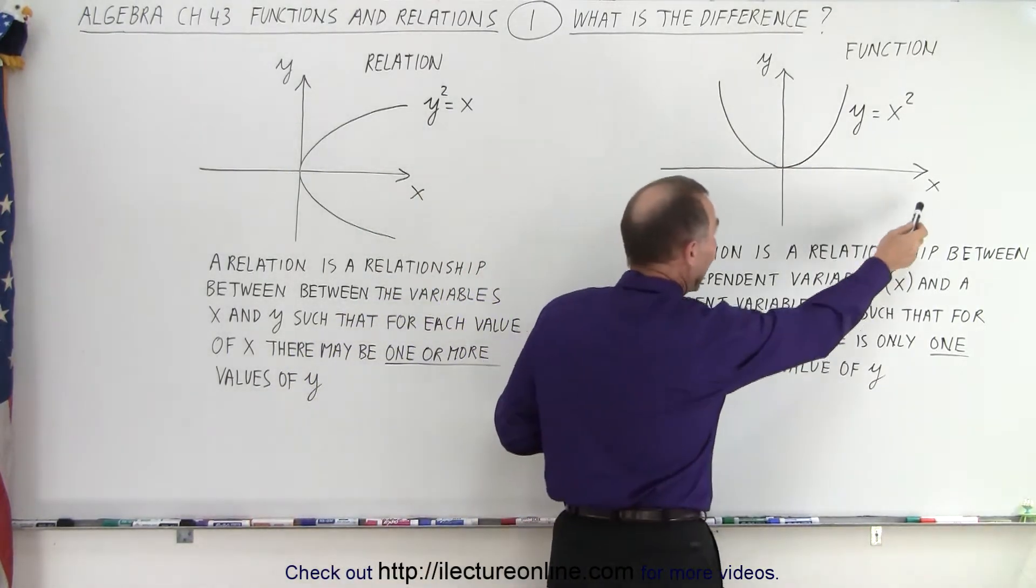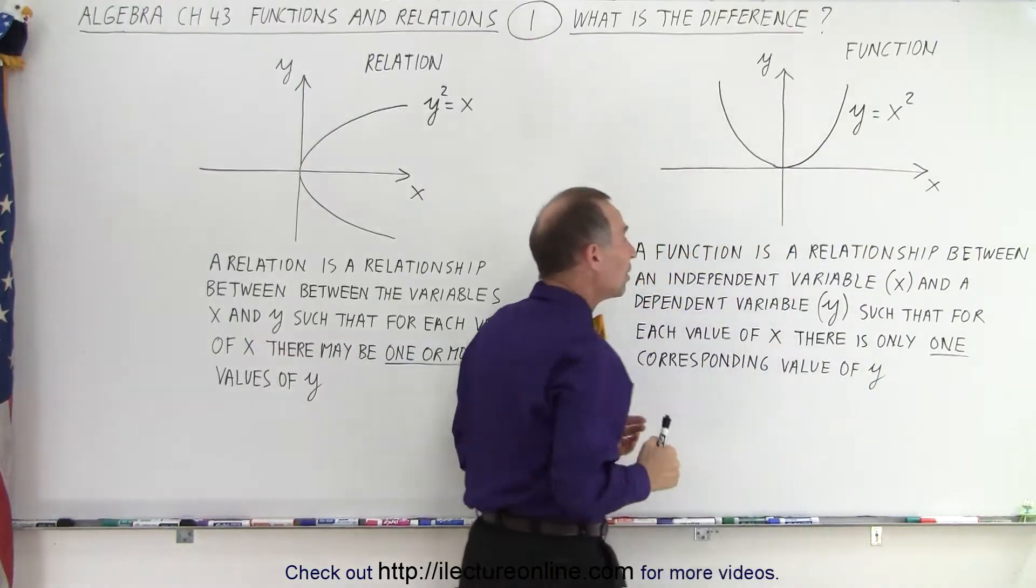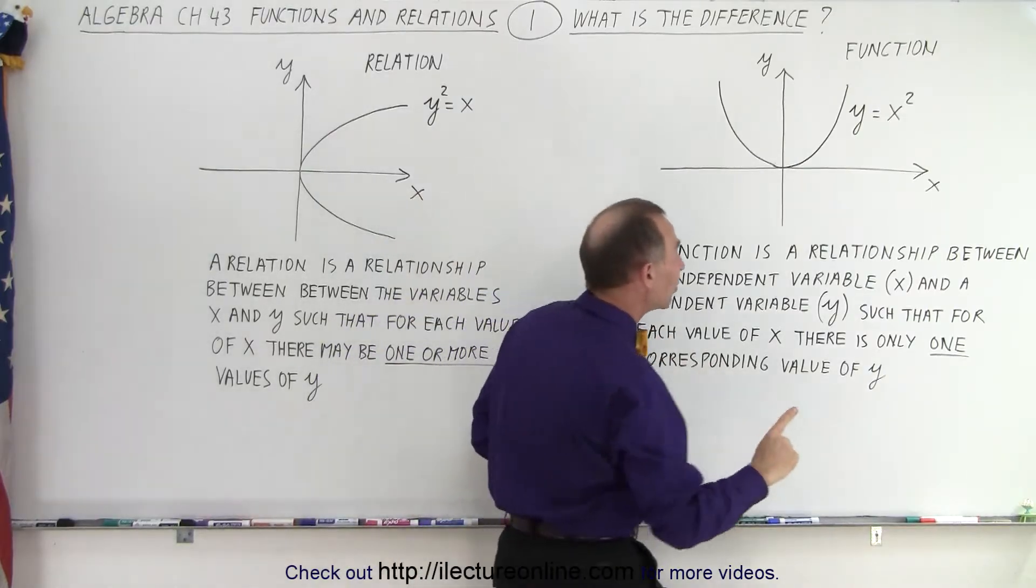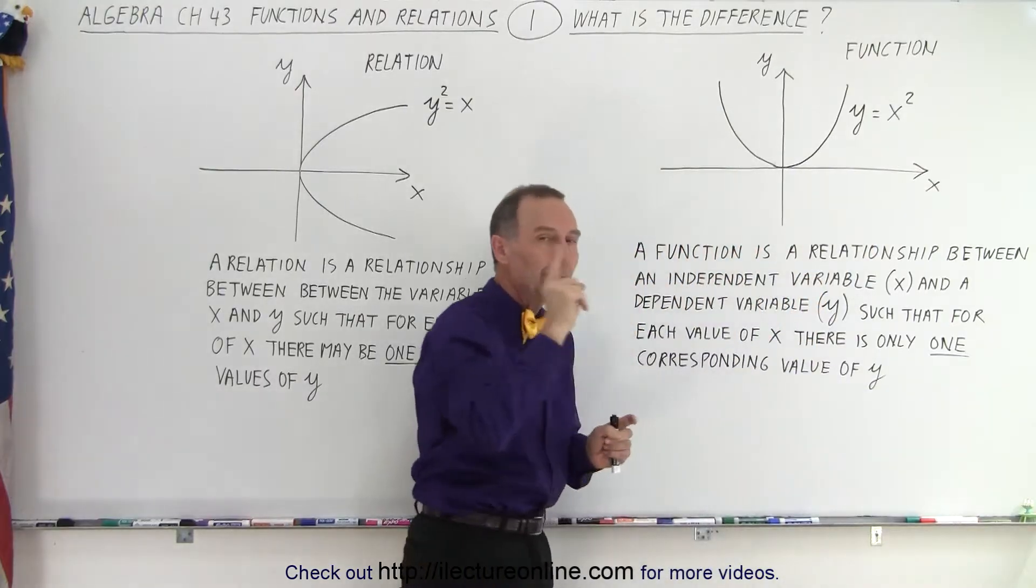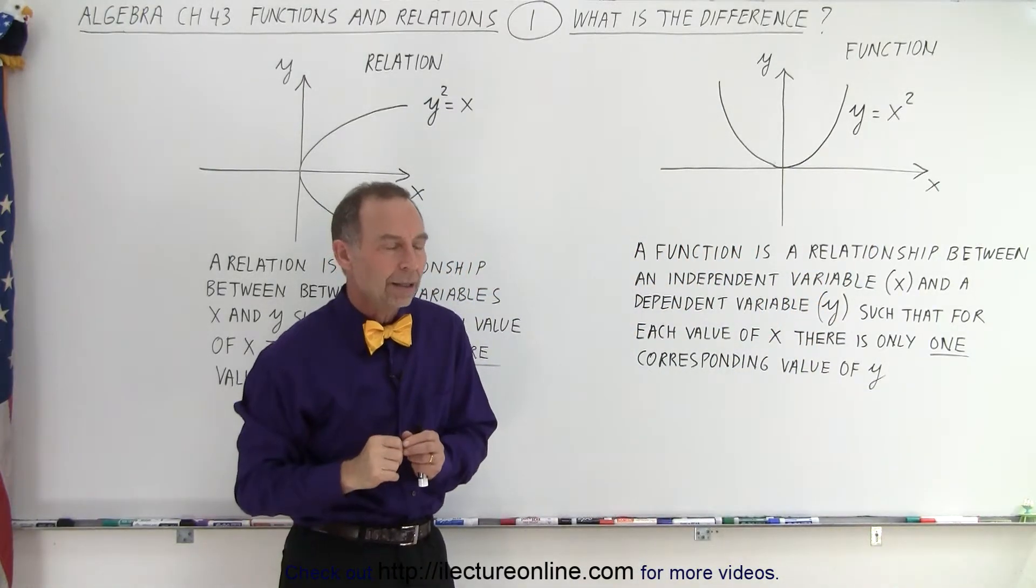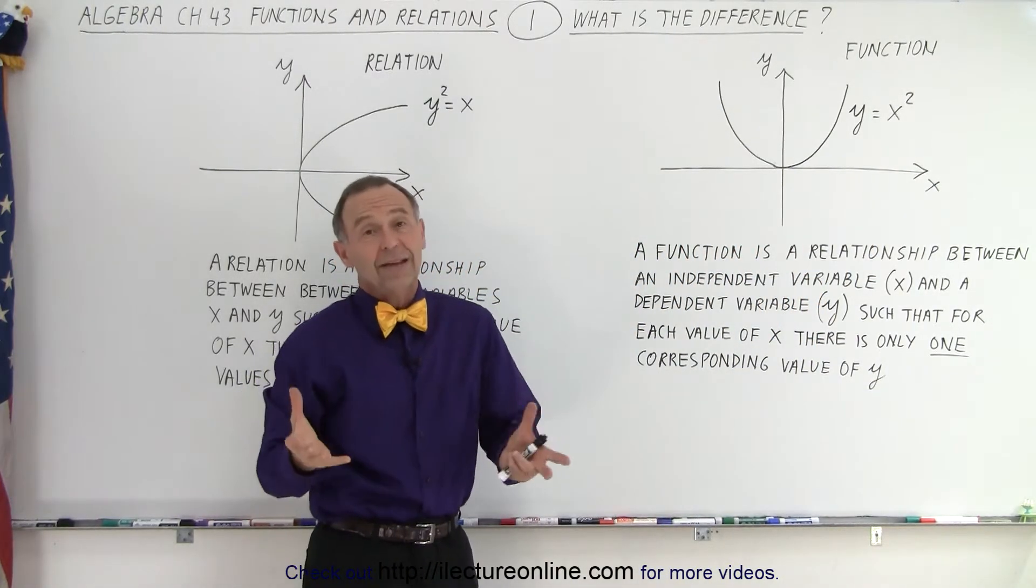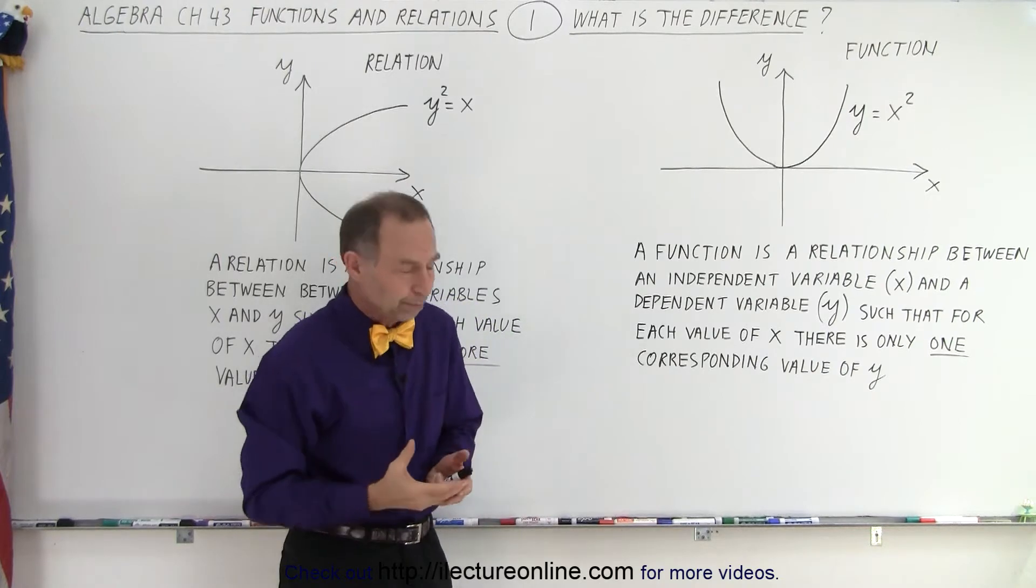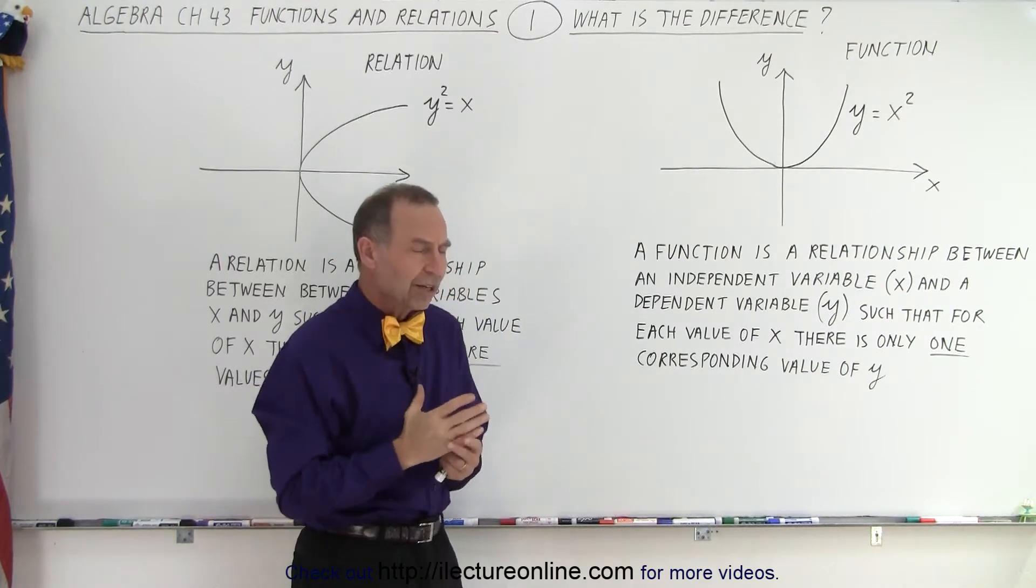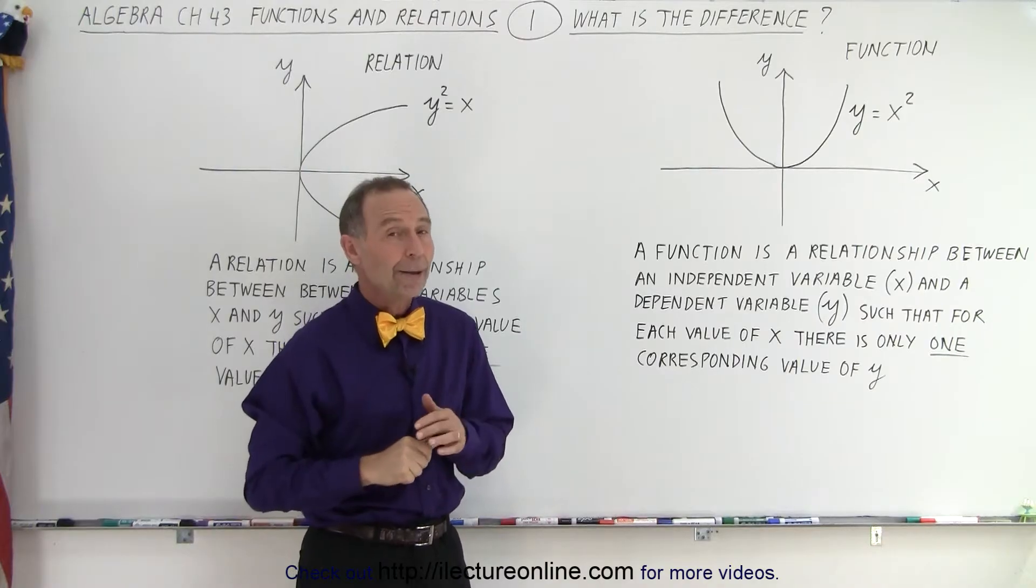The independent variable would be x, and the dependent variable would be y, in such a way that for each value of x, there's only one possible value for y. And that is, in essence, the definition of a function. Any value of x, there will only be one value for y.